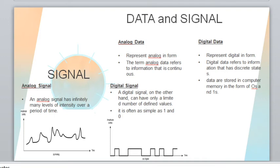Data can be any information and can be represented as analog or digital data. Analog data refers to information in a continuous form. If the information is in a discrete state, it is called digital data. In computers we normally use zeros and ones for data storage, so computer data is digital data.